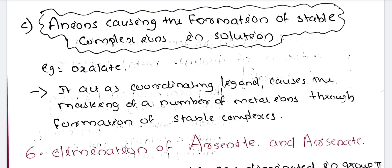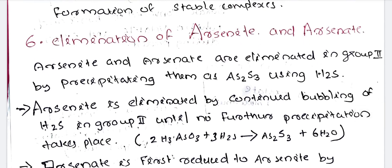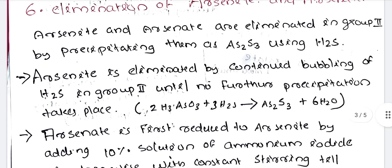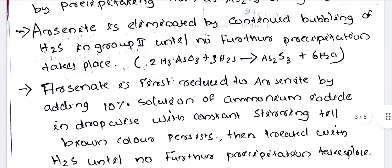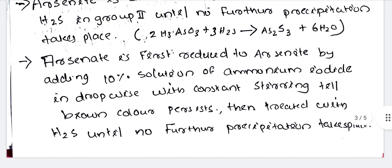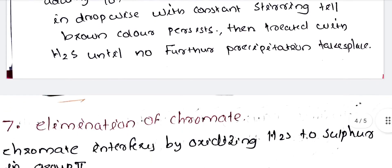Elimination of arsenate and arsenite. Arsenite and arsenate are eliminated in group 2 by precipitating them as As2S3 using H2S. Arsenite is eliminated by continued bubbling of H2S in group 2 until no further precipitation takes place. Arsenate is first reduced to arsenite by adding 10% ammonium iodide dropwise, then treated with H2S until no further precipitation takes place.